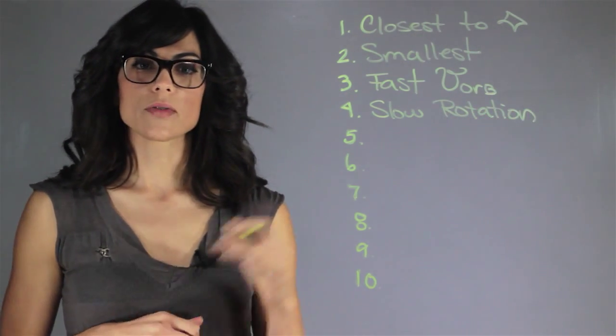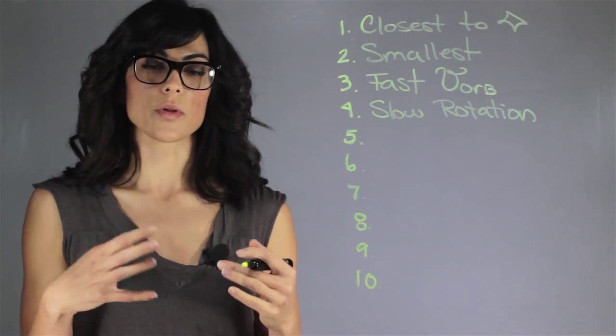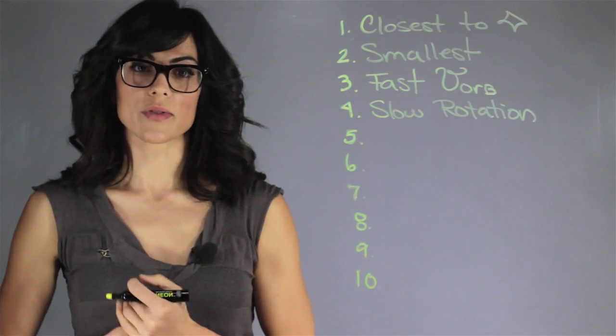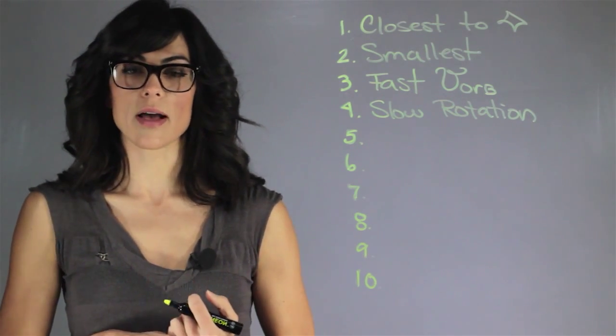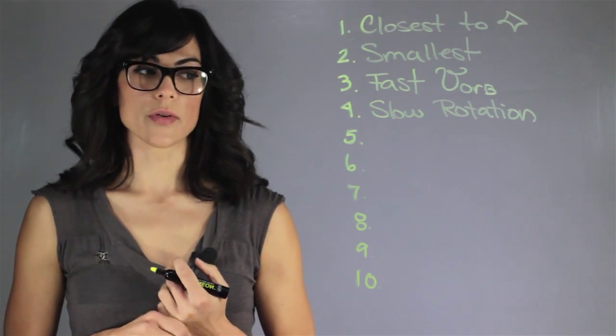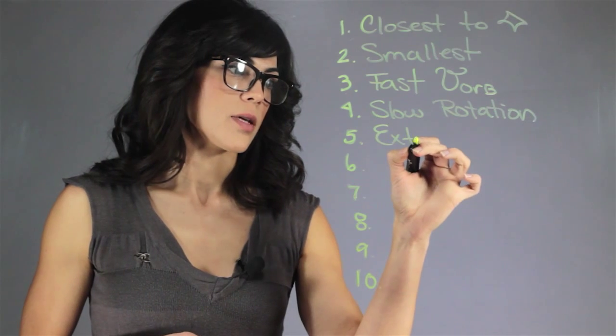Now because of this slow rotational period you can actually get really cold and really hot. Most people think because it's closest to the Sun it's always very hot but it can actually get minus 200 degrees Fahrenheit on the surface of Mercury so it actually has extreme temperatures.